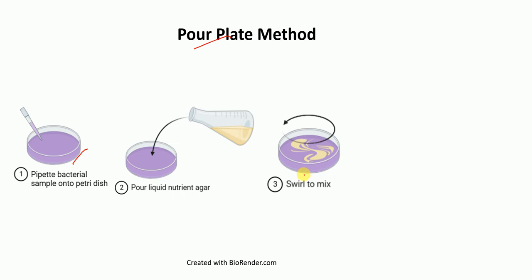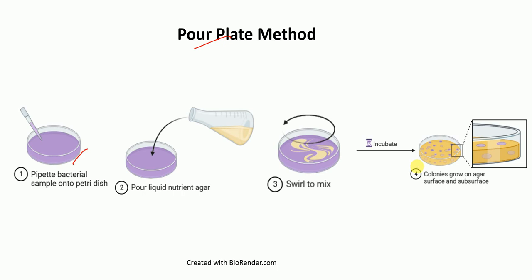And then finally, we incubate it so that the colonies grow on the media. This is called the pour plate method — because here we pour the media on the plate.